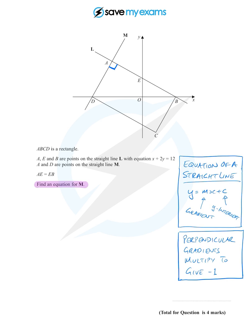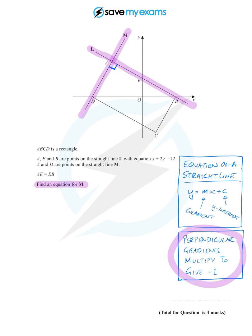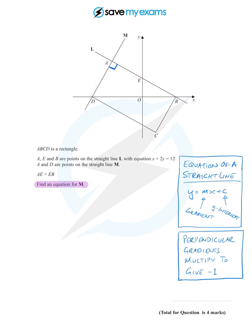They want us to find an equation for M, this line here. The first thing to notice is that M is perpendicular to L because of that right angle marked in. When finding the equation of a straight line — y equals mx plus c — we want to find the gradient of M using the fact that perpendicular gradients multiply to give minus one. We also need a point on M, and the obvious point to find is A.